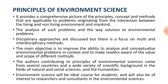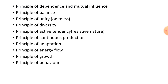The principle of dependence and mutual influence states that organisms in the environment — both living and non-living, biotic and abiotic factors — depend on each other. For example, plants depend on sunlight: through the photosynthesis process, sunlight energy is used by plants to create food. These living and non-living things are thus dependent on each other.